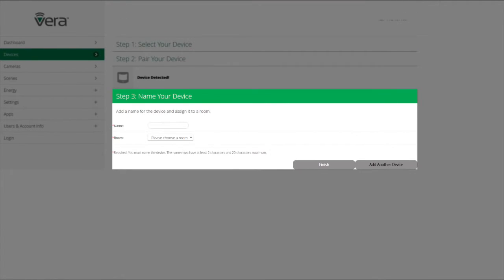You'll click Next and you'll need to name your device and choose what room it's going into. Once you've done that, you can either click on Finish or add another device.